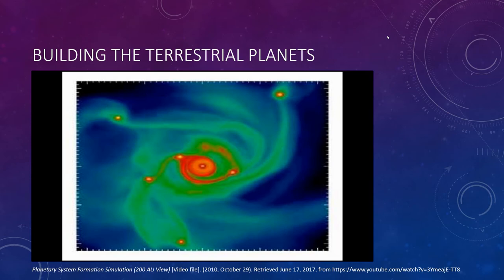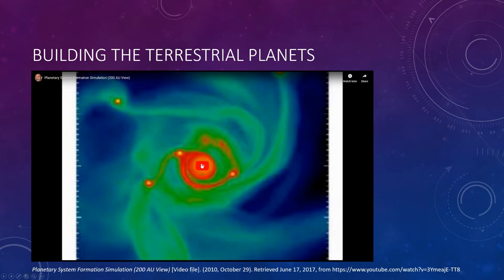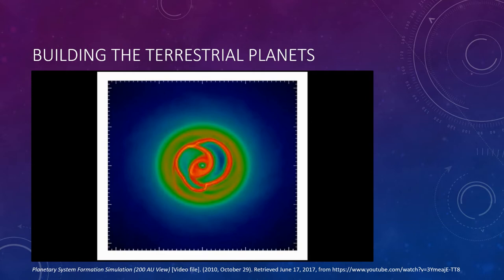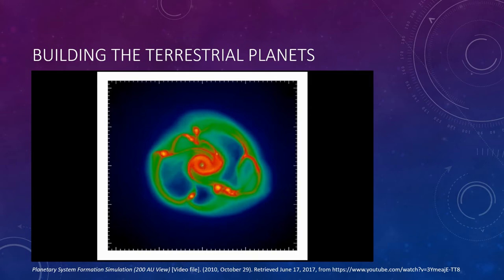Here is a simulation of a planetary system forming—a supercomputer model. Here we see the solar nebula as a disk that begins to warp and change shape, forming little chunks as clumps of matter get stuck together.